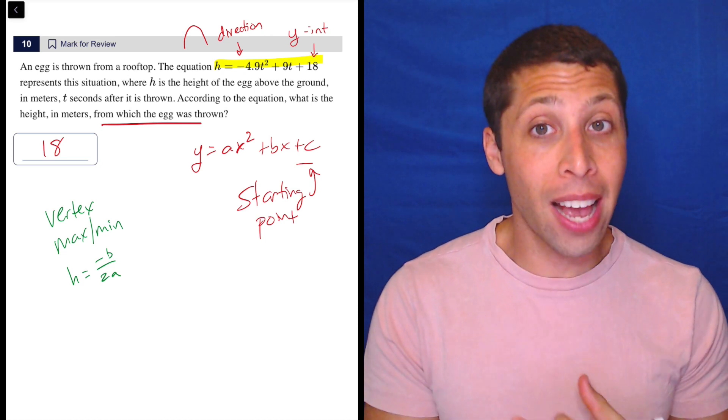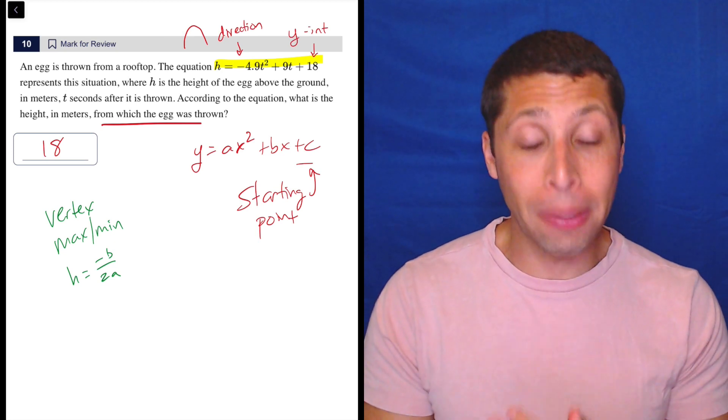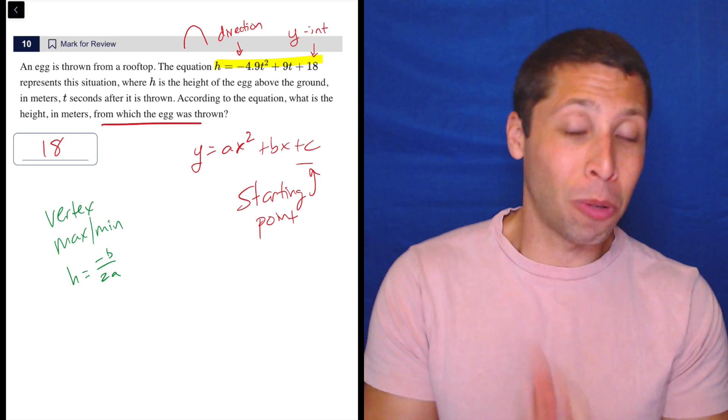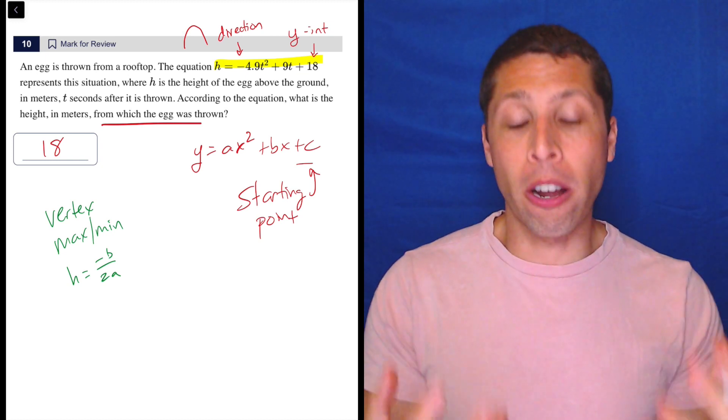So, the standard form, like I said, gives us the direction of the parabola and the y-intercept. And so, once we've got that, we are hoping that that's what they asked for. And so, that's already on our minds. And as it is with stories.